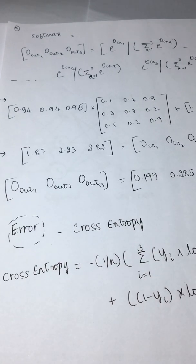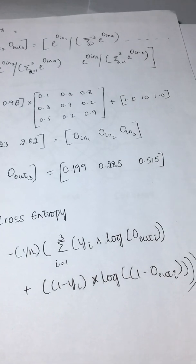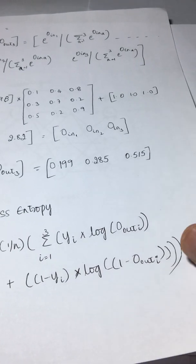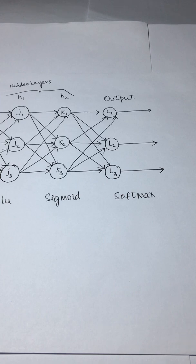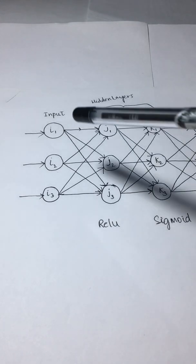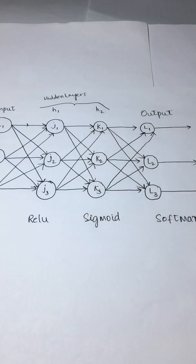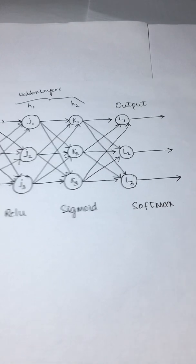Now you have your actual output values. You calculate your error using cross entropy: if the target is 1, it is log of that output; if the target is 0, it is 1 minus log of the value. This is the complete forward pass — moving from input to H1, H1 to H2, and H2 to the output. Now is where the main part comes in: the back propagation. That is what we'll discuss in the next session. Thank you.